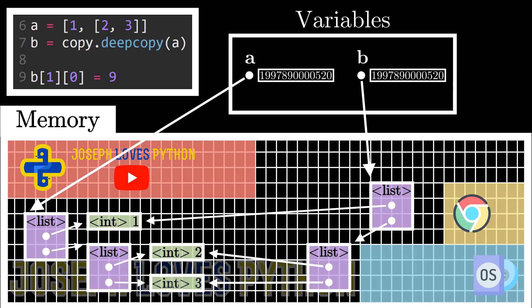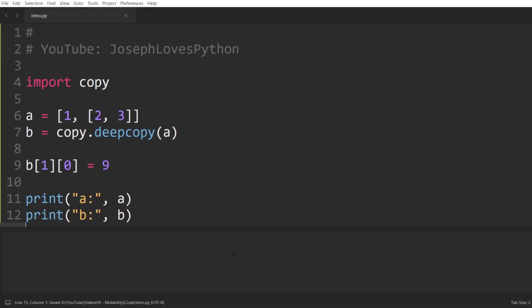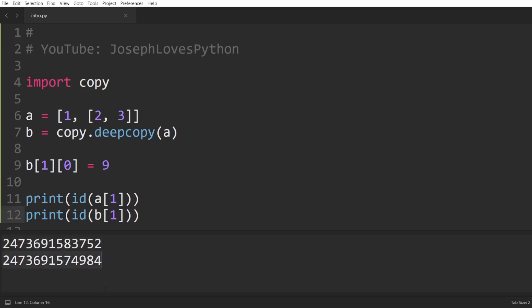Any modifications to B will never affect A in any way. When setting B[1][0] equal to 9, we modify a pointer unique within B's structure, so its modification won't affect A's value. An integer object with value 9 is created and this pointer now points to it. Printing both A and B confirms A remained unaffected by this modification to B. We can also verify that A[1] and B[1] have different IDs, confirming the inner list was copied in memory.